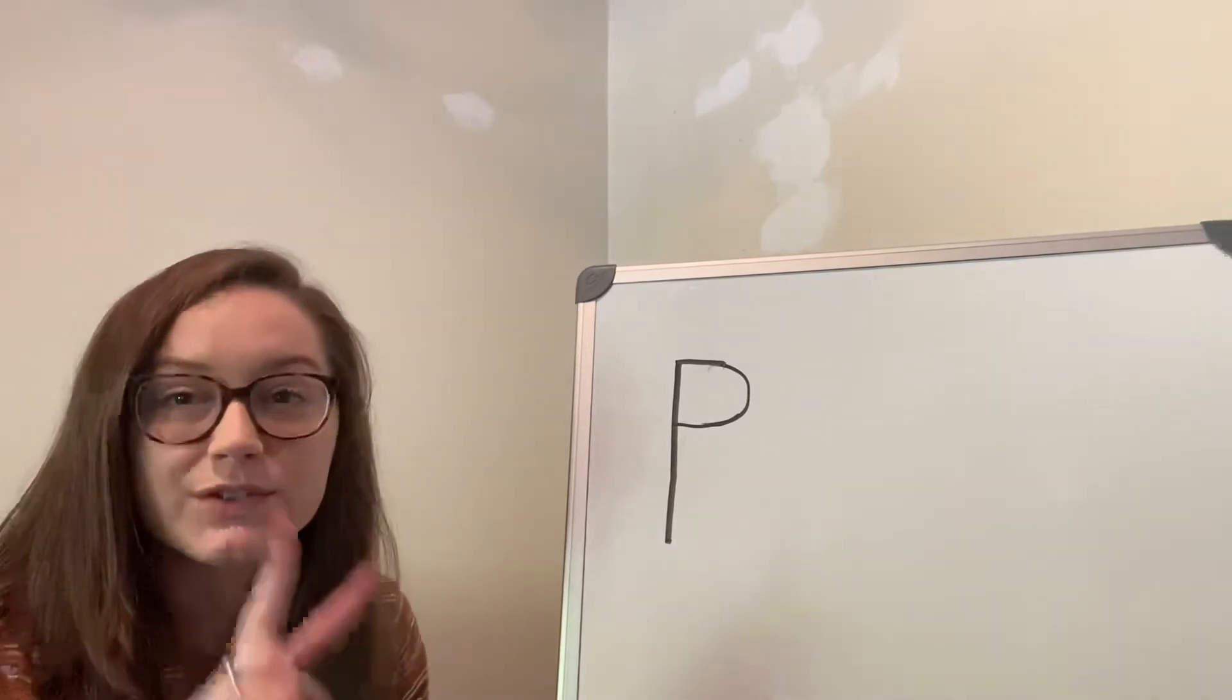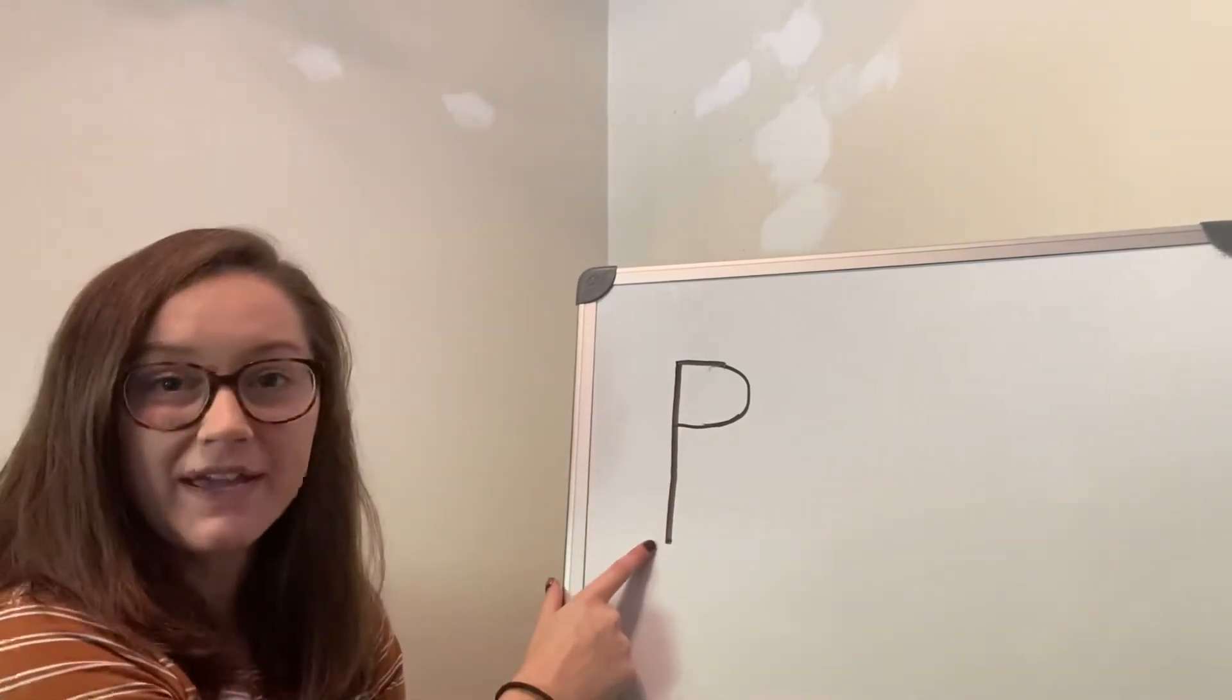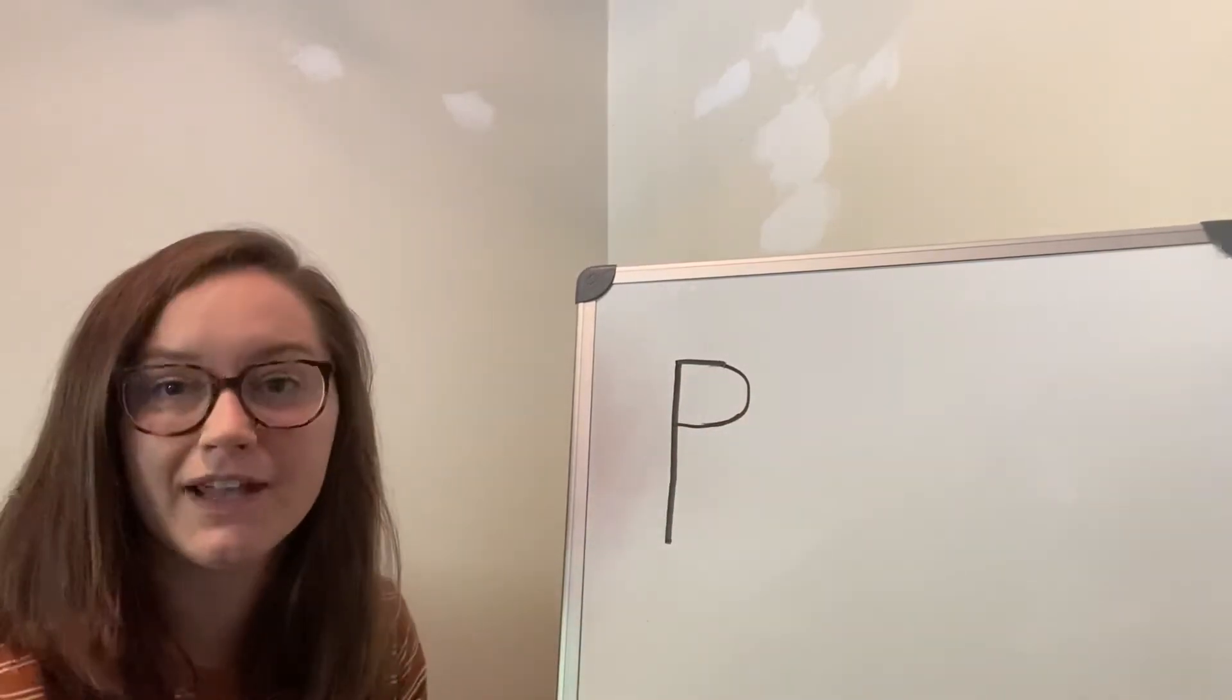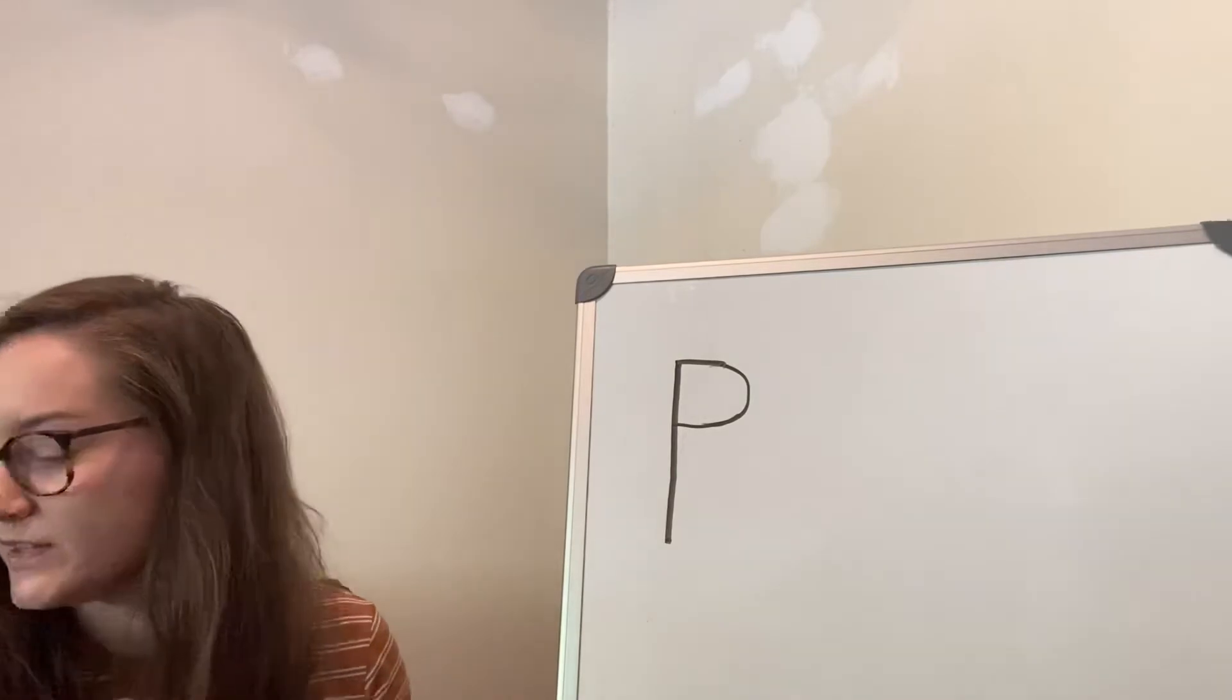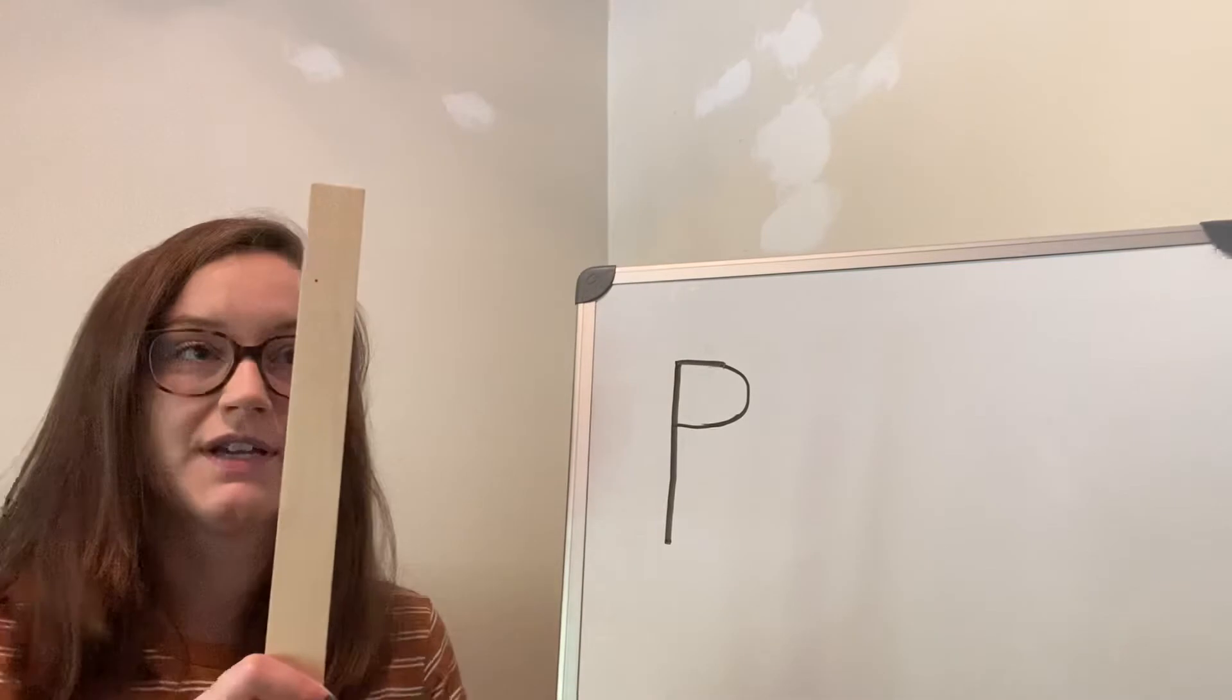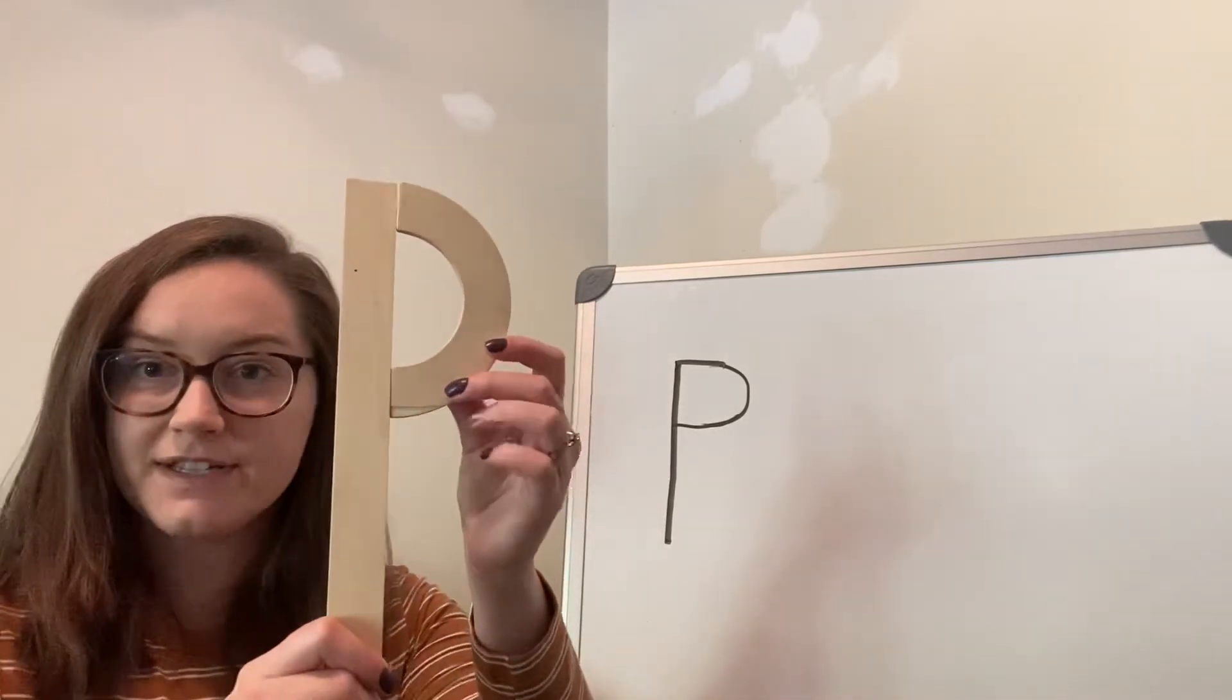For our P I see two shapes. Right here we have a big line and right here a little curve. So if I were to take my sticks I would have my big line down and my little curve would go at the top just like that.